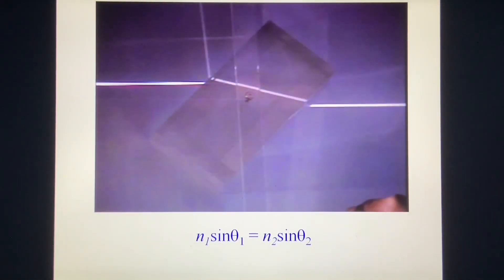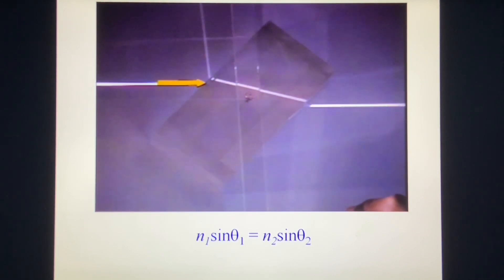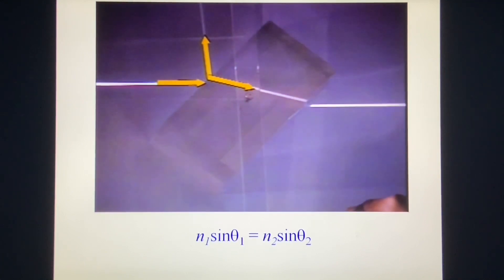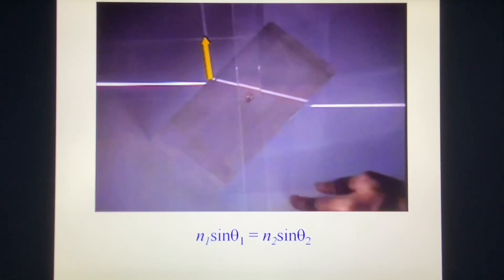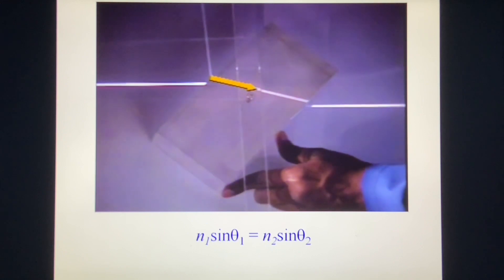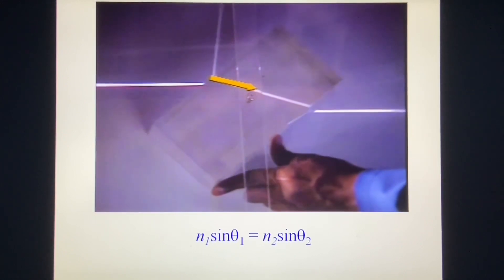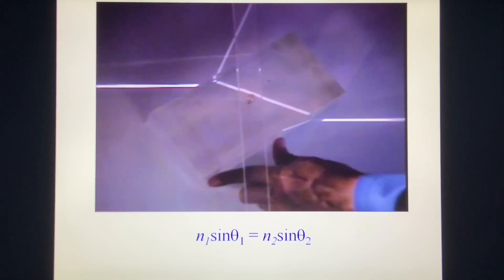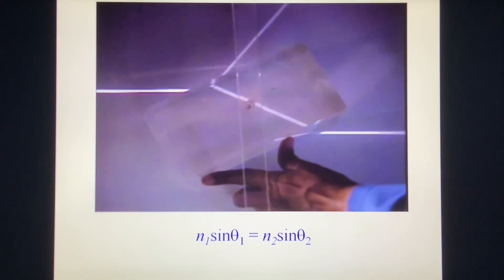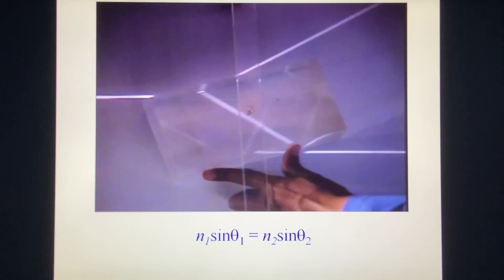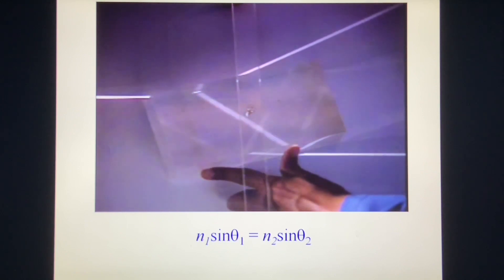When a beam of light strikes the surface of a transparent material, the beam is both refracted and reflected at the surface. This is the reflected beam and this is the refracted beam. Notice how the angle of each beam changes as the block is rotated.